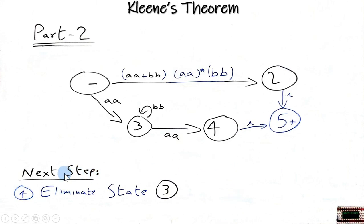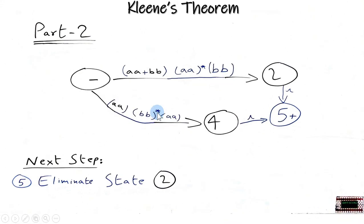Now in the next step we will eliminate state number 3. So state number 3 also has a loop of BB. These AA will come inside the brackets and these AA would also come inside the round brackets and the loop inside the Kleene star. So our new TG looks like this: AA, AA and BB inside the Kleene star because it was in loop.